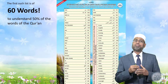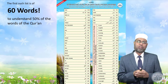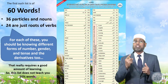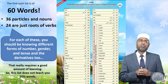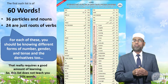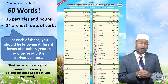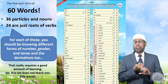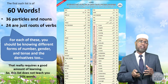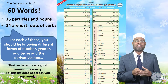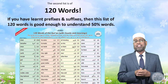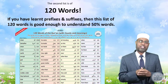The first list is of 60 words to understand 50% of the words of the Qur'an. Out of these 60, 36 are particles and nouns, and 24 are just roots of verbs. That means for each of these verbs you should be knowing different forms of number, gender, and tense, and so on — that really requires a good amount of learning. So this list alone does not teach you 50%.